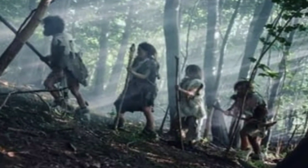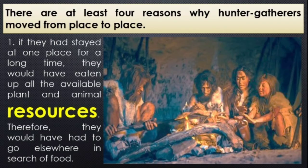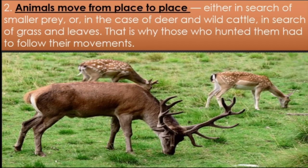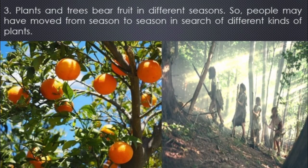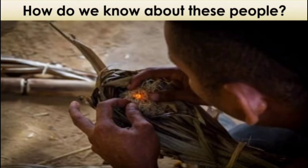There were four reasons responsible for the movement of early humans from one place to another. Number one, in search of food resources. Number two, to chase animals to hunt. Number three, to eat seasonal fruits. And number four, in search of water. So here we have completed this unit. The next part is 'How do we know about these people?' which we will study in the next video.